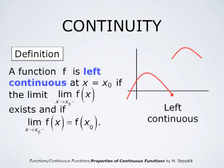A function f is left continuous at x equals x₀ if the limit as x approaches x₀ through numbers smaller than x₀ of f(x) exists and equals the value of the function at that point. Likewise, a function is right continuous at x equals x₀ if the limit as x approaches x₀ through numbers larger than x₀ of f(x) exists and equals the value of the function at that point.